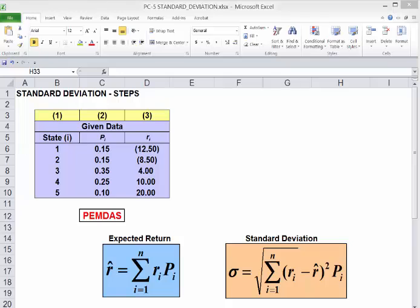On this screen, you're seeing the data you would be given. States of the economy, the probability of those states occurring, and the expected return on the asset or investment in those states.